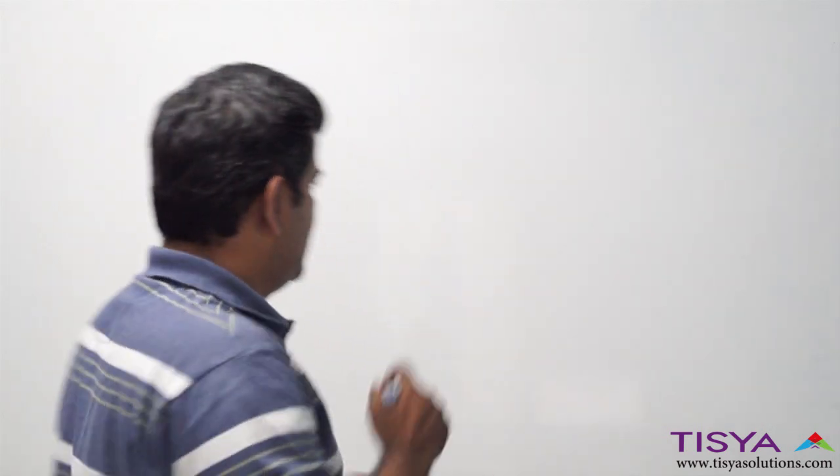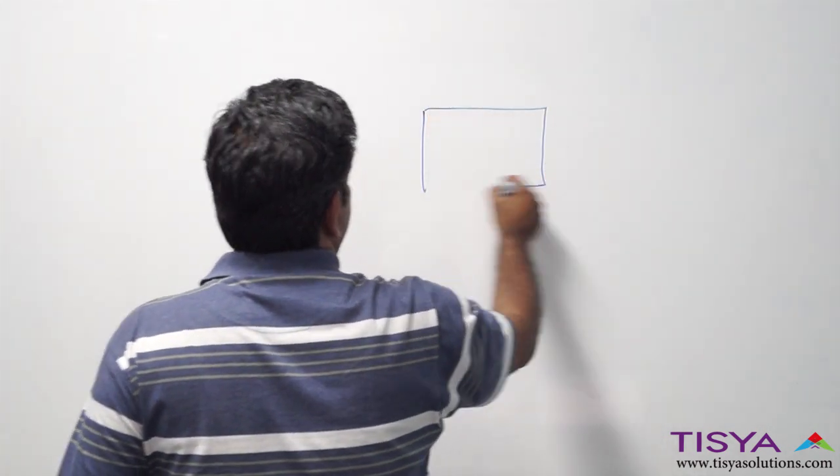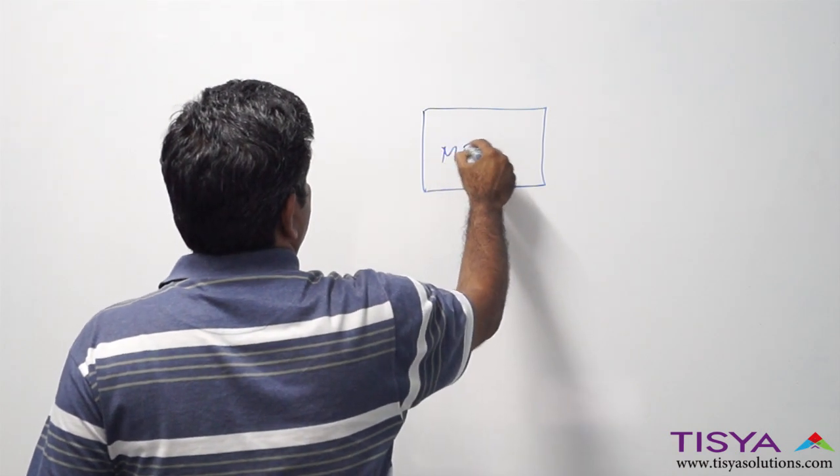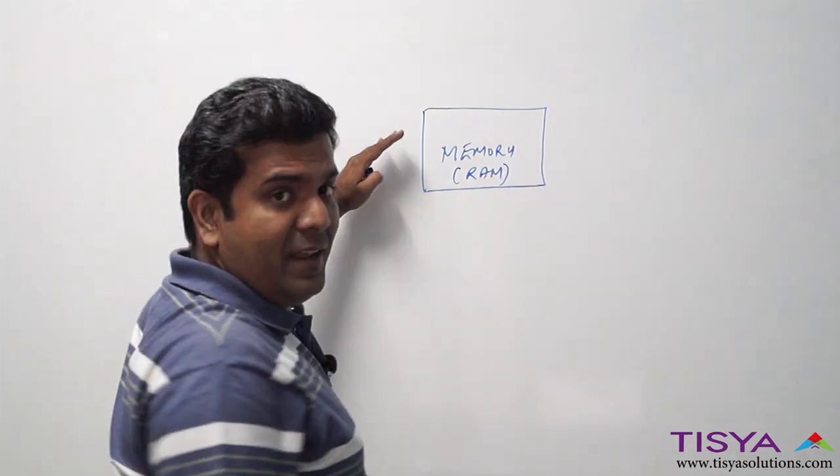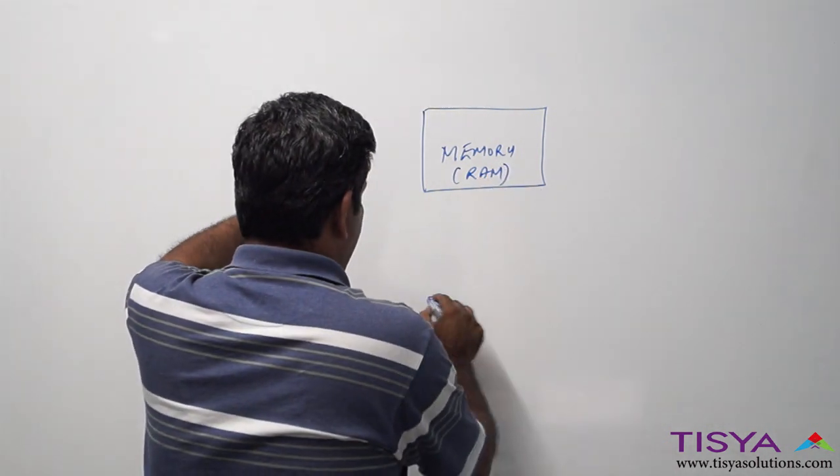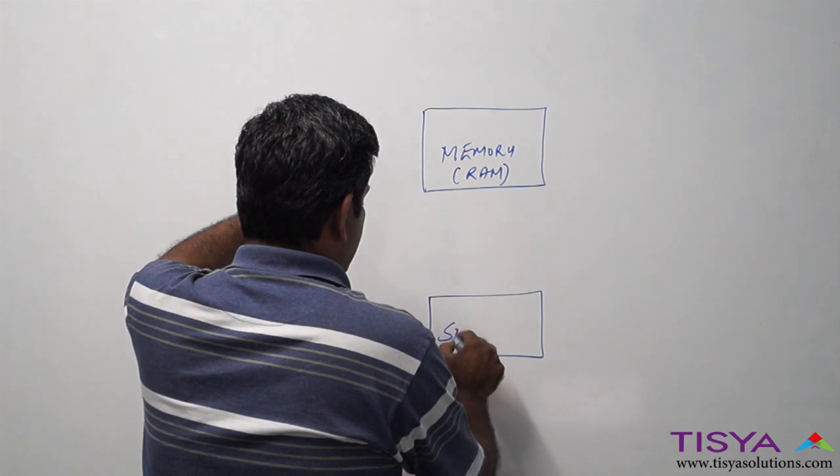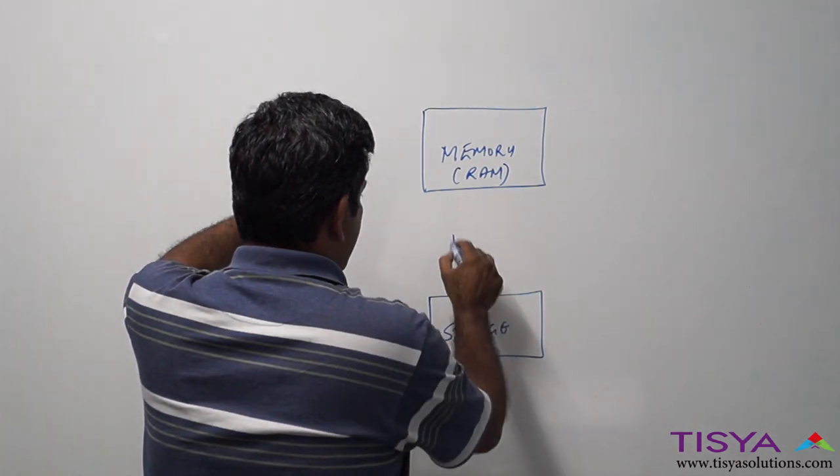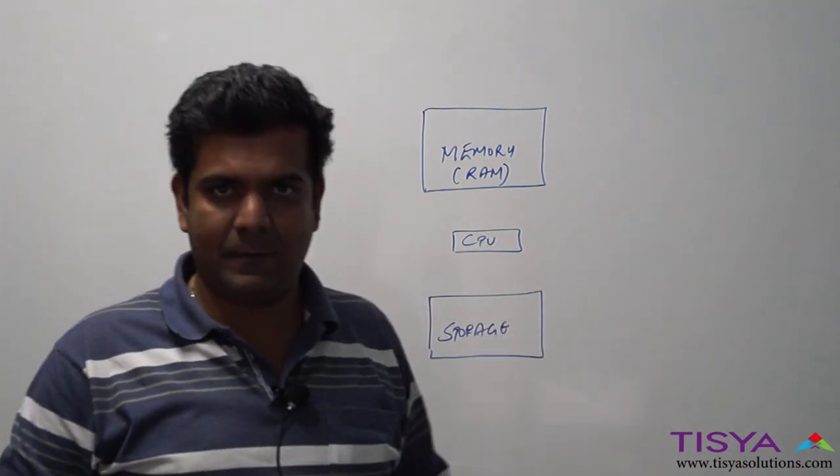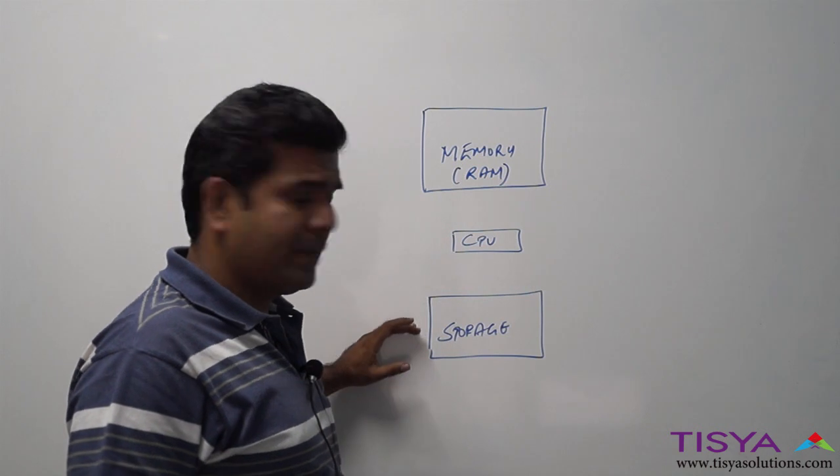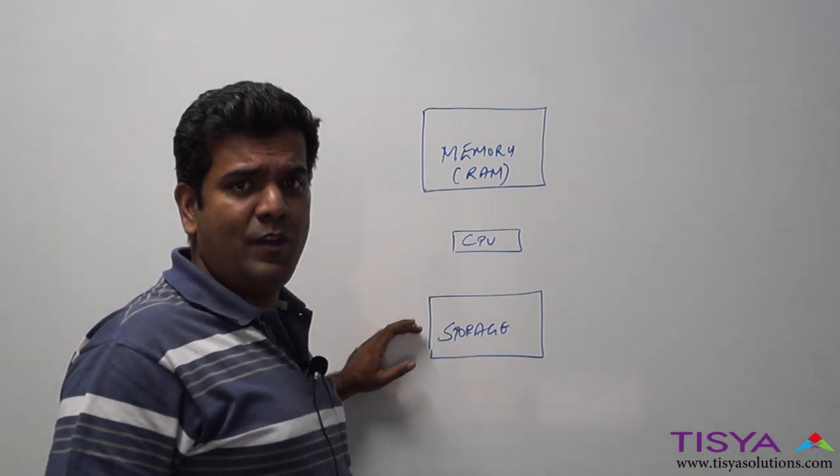There are many components, but primarily there is memory or RAM, CPU, and storage. Depicting it on the board, we have memory, storage, and the processor. These three resources are primarily used when you do any computing.